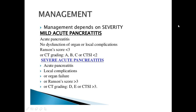How can we manage a case of acute pancreatitis? Management depends on severity. Mild acute pancreatitis means no organ dysfunction or local complications, Ranson score less than 3, or CT grading A/B/C, or CT Severity Index less than 2. Severe acute pancreatitis means local complications or organ failure, Ranson score more than 3, or CT grading D/E, or CT Severity Index more than 3.